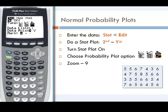That will change our options. We want our list to be L1 and we want our data axis to be X, with X representing our data.